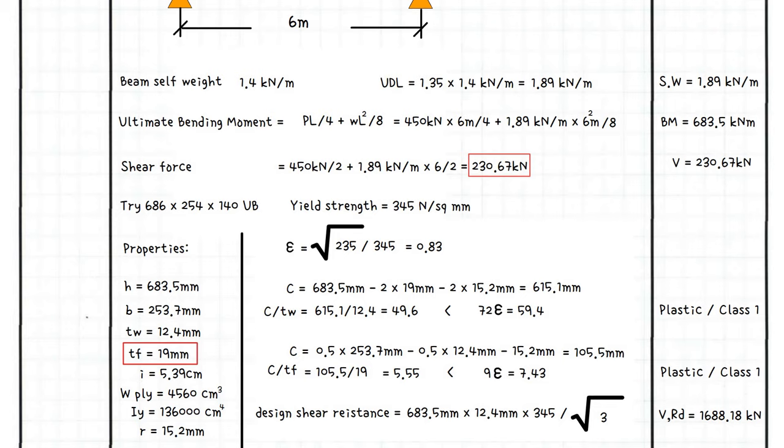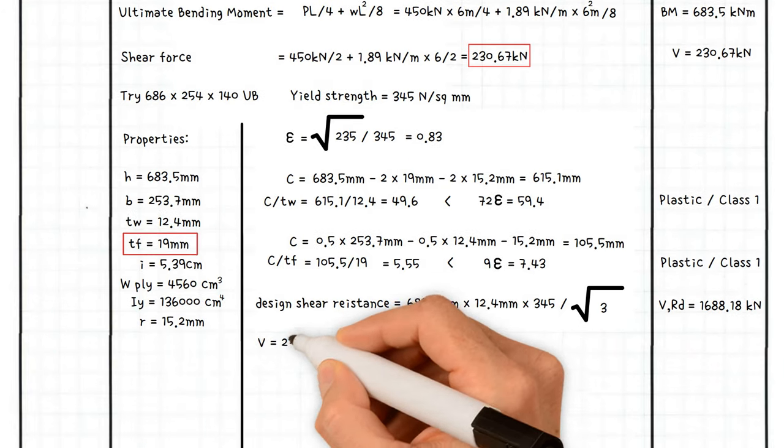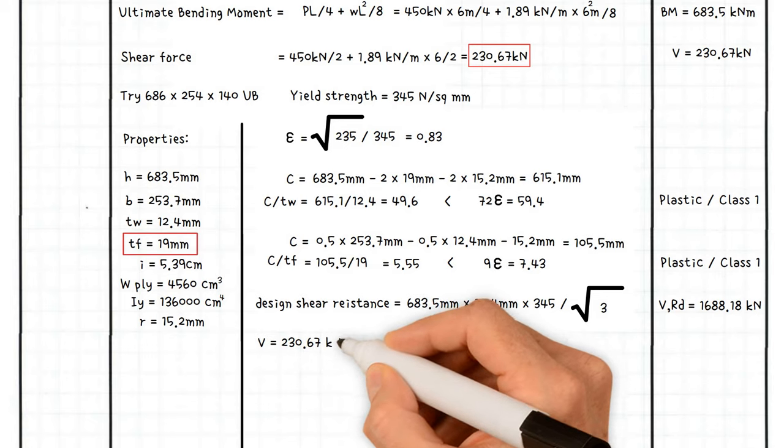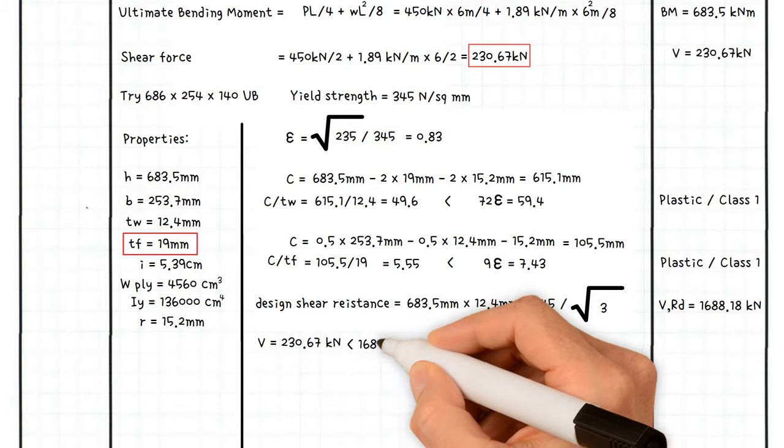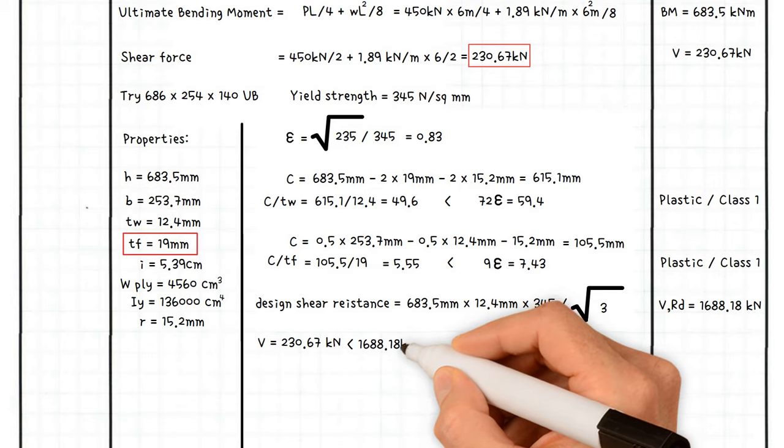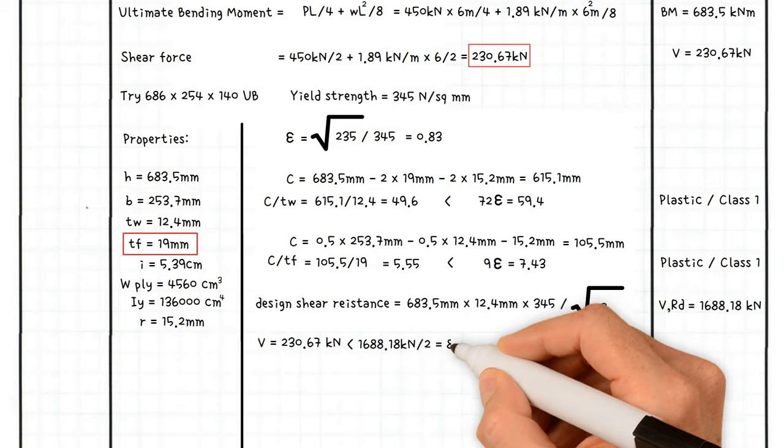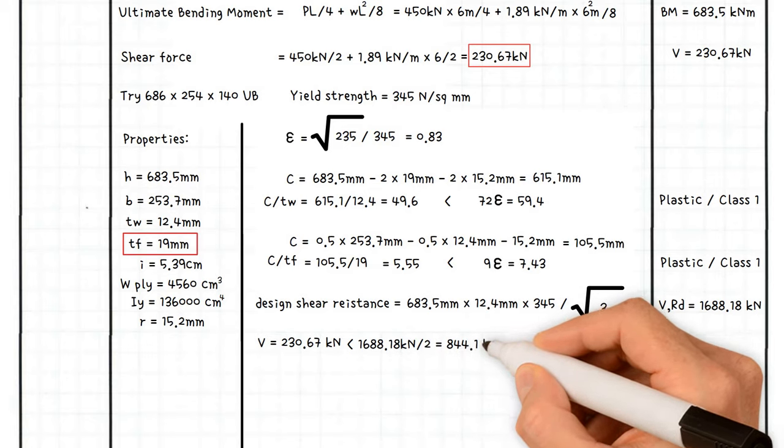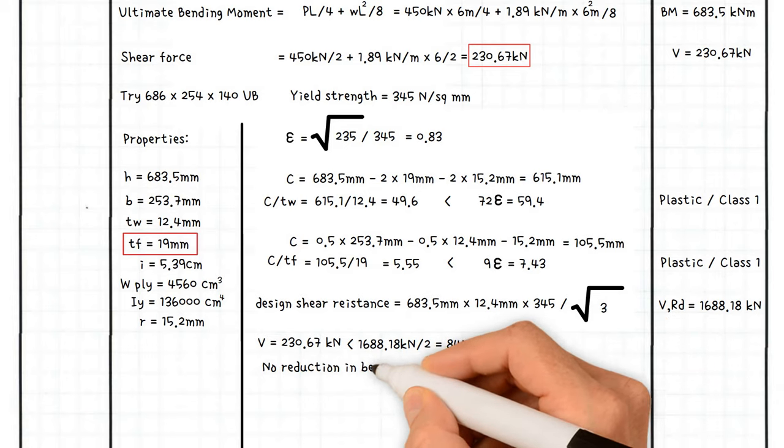Check for bending moment resistance modification factor due to high shear. Applied shear force 230.67 kilonewtons is less than half of the design shear resistance 1,688.18 kilonewtons. Therefore, no reduction in bending resistance.